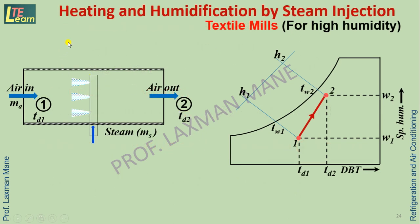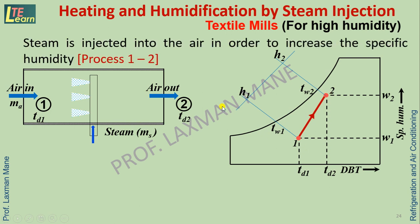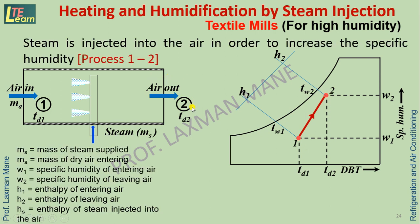Heating and humidification by steam injection is used in textile mills for higher humidity requirements. This process is done by steam injection into the air, with steam supplied at a rate of Ms. Air enters at state 1 and exits at state 2, as shown on the psychrometric chart by process 1 to 2. The key parameters are: Ms — mass of steam, Ma — mass of dry air, W1 and W2 — specific humidity at inlet and outlet, H1 and H2 — enthalpy at inlet and outlet.